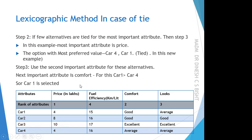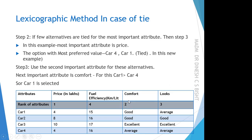Since two cars are tied and I need to select one, I move to Step 3. In Step 3, I look at the second most important attribute — the attribute with rank 2 — but only for the tied alternatives. My subset is now reduced from four cars to two: Car 1 and Car 4. The rank 2 attribute is comfort, so I compare Car 1 and Car 4 on comfort.